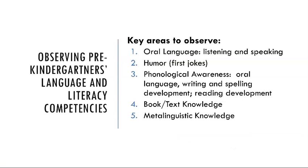We're going to start by looking at what are the key areas that we need to observe in pre-kindergarteners' language and literacy competencies. When we're observing pre-kindergarteners we want to focus on their oral language — their listening and speaking skills, how they are communicating, and if they're able to use humor. We're also going to look at their phonological awareness, oral language, writing and spelling development, reading development, book and text knowledge, and their metalinguistic knowledge.